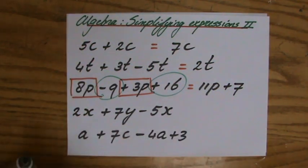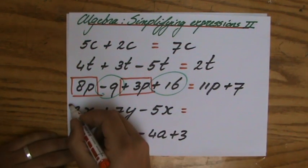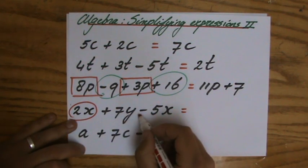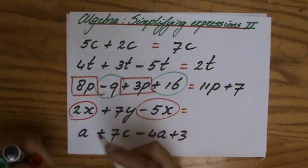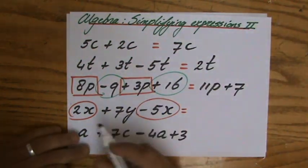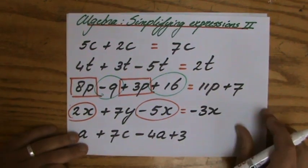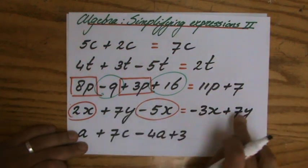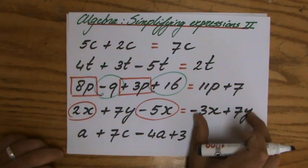Moving on to the fourth question, identifying the like terms. I have a positive 2X and a negative 5X. That negative belongs to the 5X. 2X minus 5X, please be very confident and familiar with directed numbers. 2X minus 5X, that is minus 3X. Then I still have 7Y left, a positive 7Y. These are unlike terms, so I cannot simplify that any further.